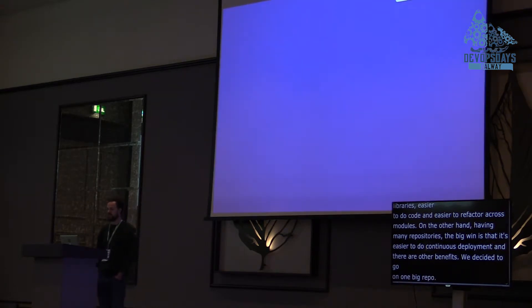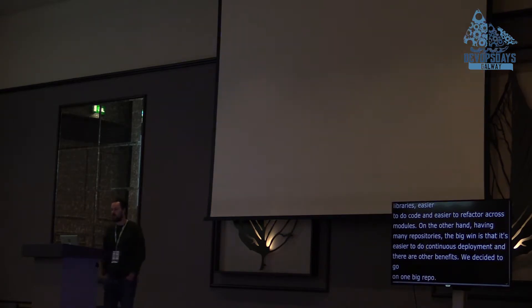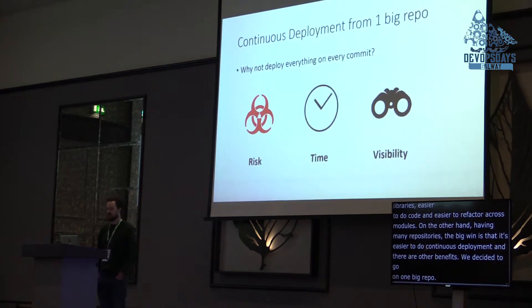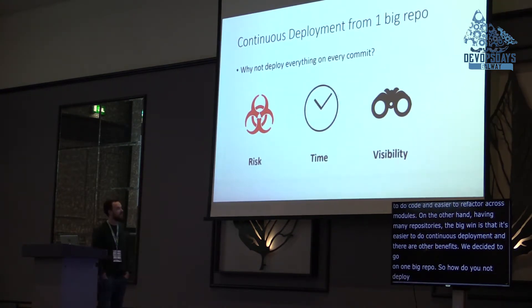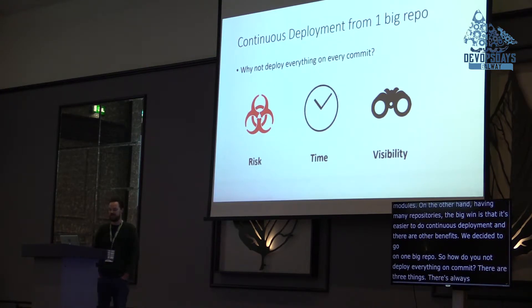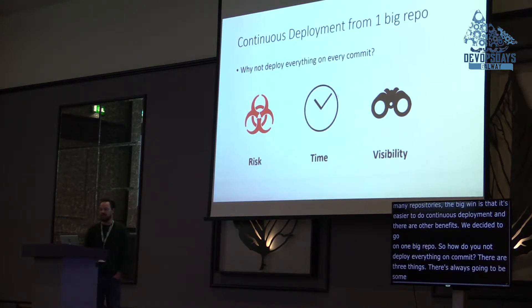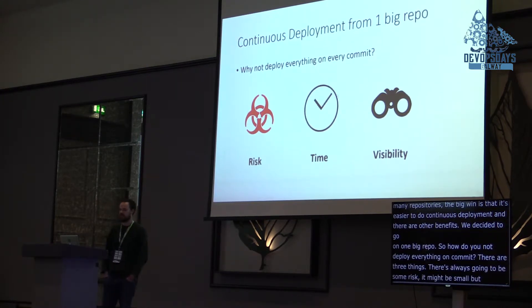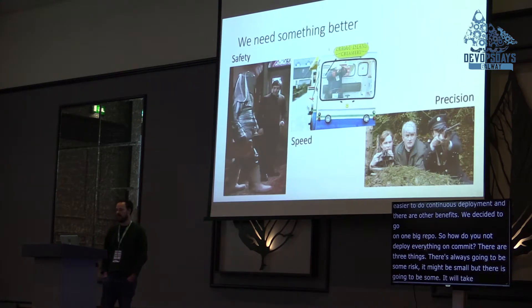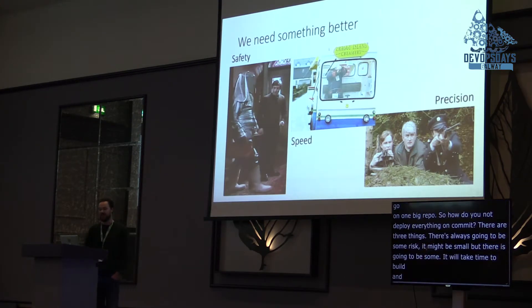So how do you do continuous deployment from one big repo? Why not deploy everything on every commit? Well, there are three things: there's always going to be some risk — it might be small, but there's going to be some risk. It's going to take time to build and deploy, do canary releases, everything. So we need something better.